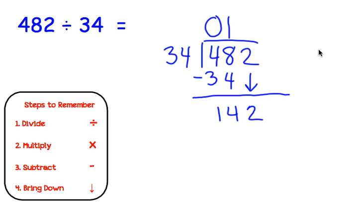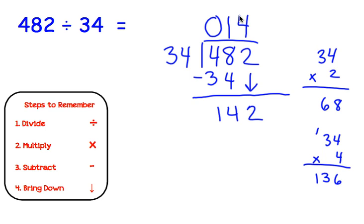Now, this is the hard part. How many times does 34 go into 142? So let's do some guessing and checking here. Let's start with 34 times 2. 34 times 2 is just 68. Well, that's not close enough to 142. So let's try to double that. Let's do 34 times 4. 34 times 4. We'll do 4 times 4 is 16. 4 times 3 is 12. Plus 1 is 13. So 34 times 4 is 136. That's pretty close.